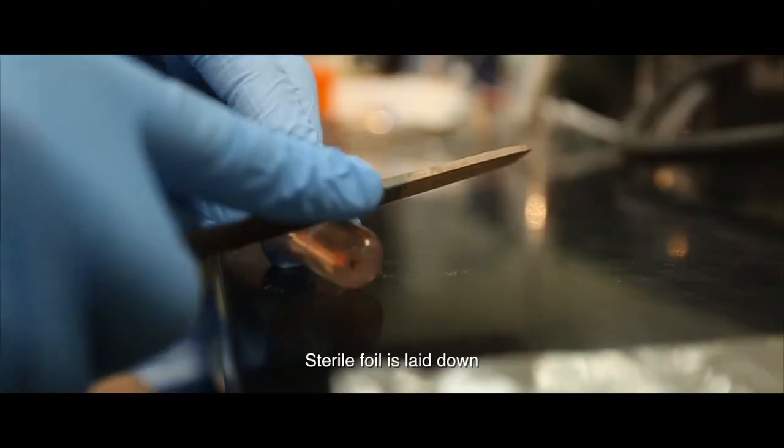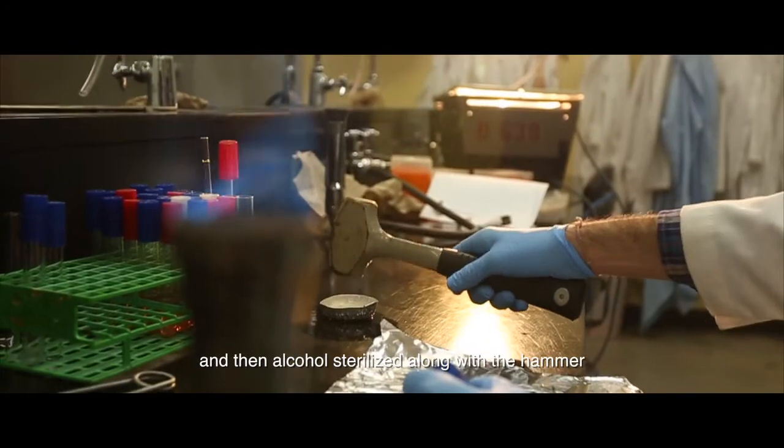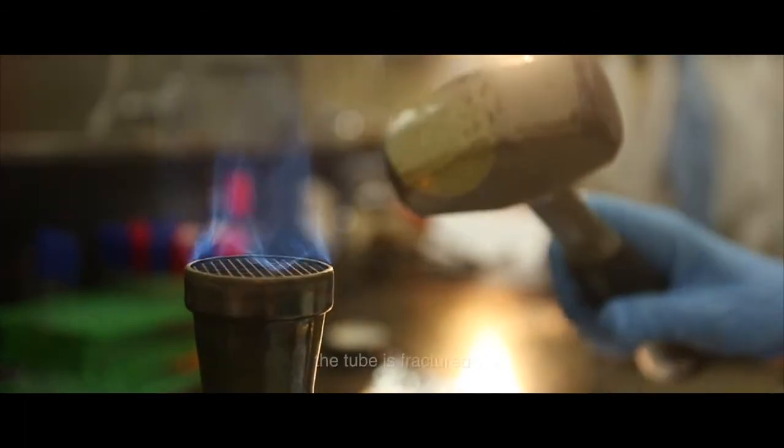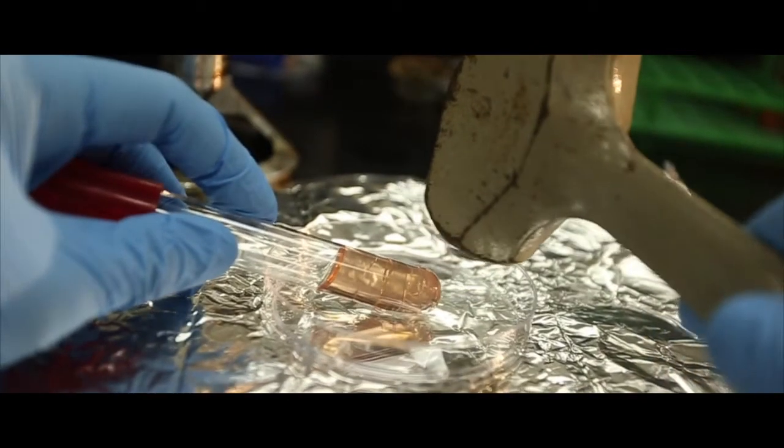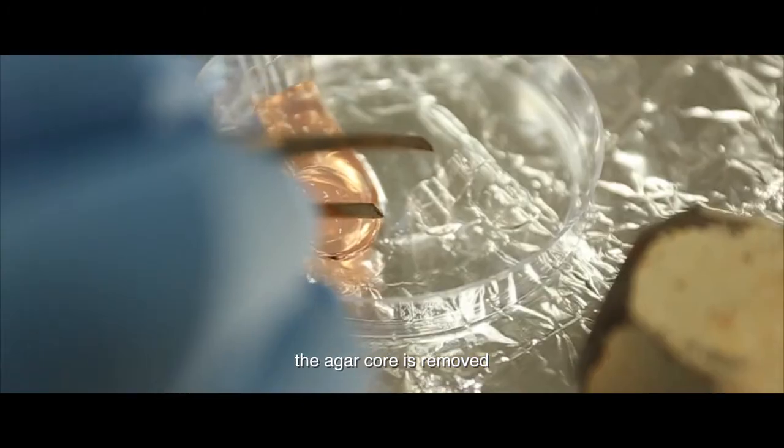Sterile foil is laid down, the oxygen gradient tube is scratched, and then alcohol sterilized along with the hammer. The tube is fractured. The auger core is removed.